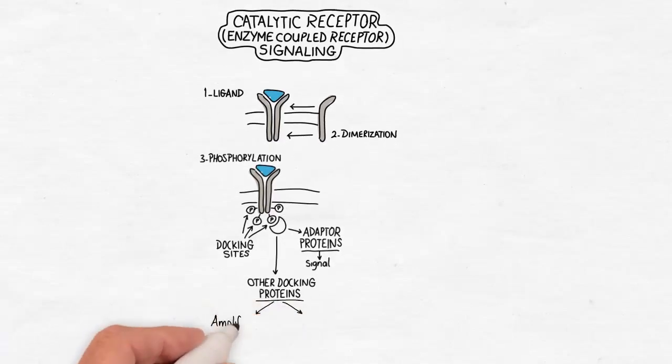But other docking proteins can also bind to these sites. These proteins might be amplifiers or suppressors, like the insulin receptor substrate, IRS-1, or the Casitas B lineage lymphoma, the CBL protein, respectively.